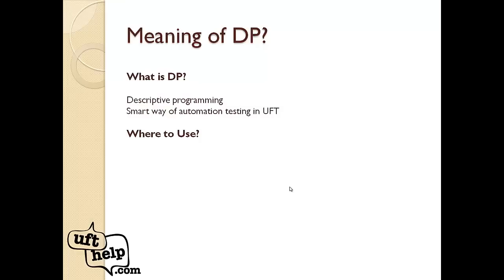Now, where to use DP — what are the scenarios where DP is most frequently used? First, objects in your application are dynamic, meaning they change at runtime. For example, a Gmail logout button that includes your username like 'ufthelp.com logout' will differ for every user, so rather than capturing those objects in the object repository, we go for DP.